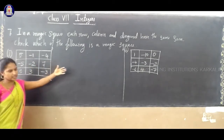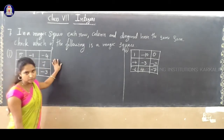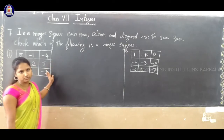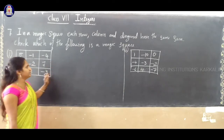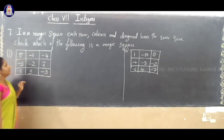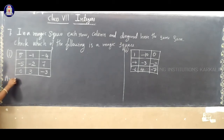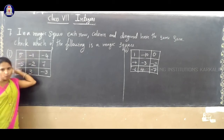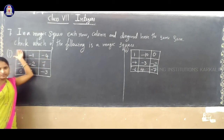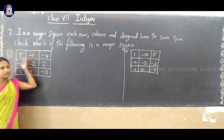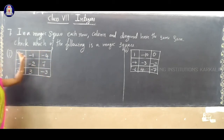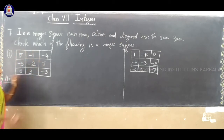So, two squares are given. How to check which one is a magic square? First you have to add each row, and similarly you have to add each column.